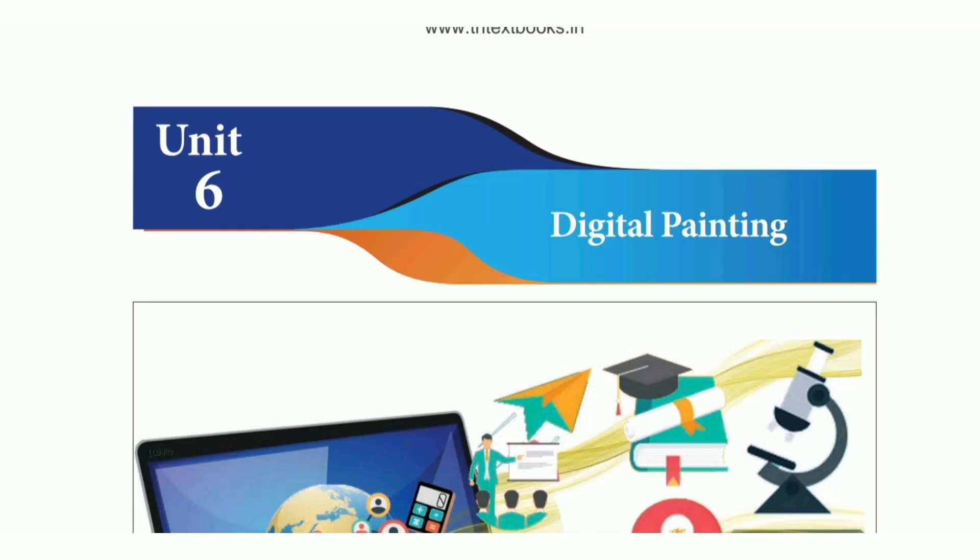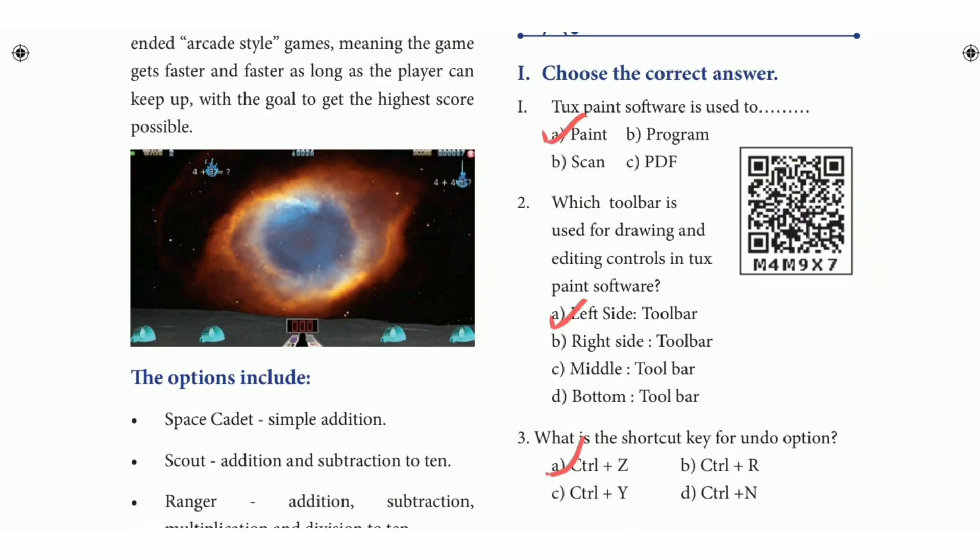In this video, we will see 7th standard science term 2, unit 6, lesson one bookback answers. Choose the correct answer. First one: TuxPaint software is used to — the answer is option A, paint.